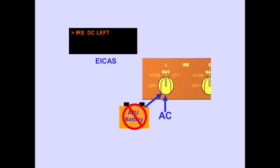The EICAS advisory message, IRS DC, indicates that DC power from the APU battery is not available.